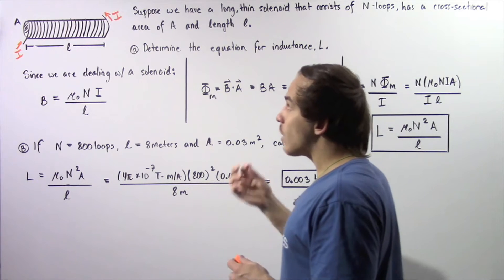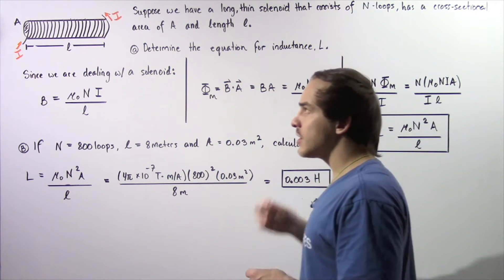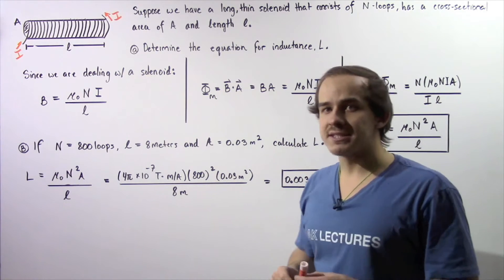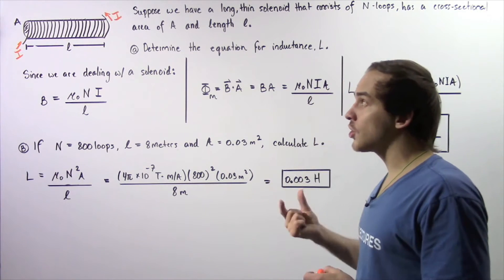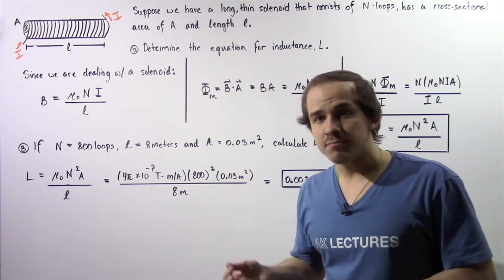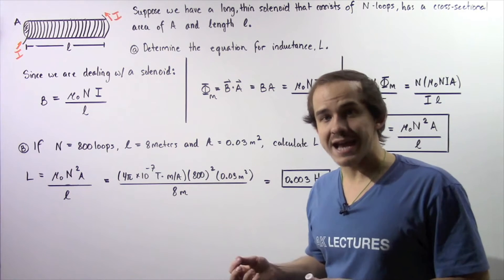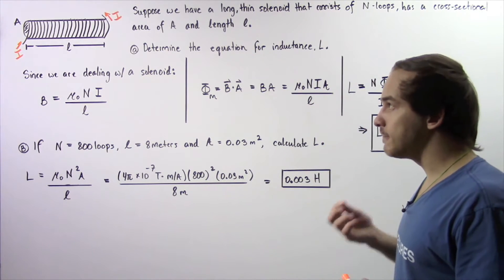Now when our electric current is traveling through the loops of wire, that will create a magnetic field inside our solenoid. And because our current is alternating, that means our magnetic field will also be changing. And that will create a changing magnetic flux.